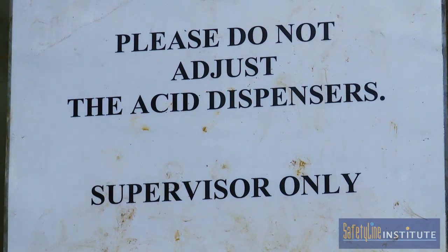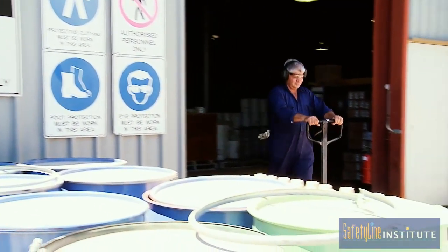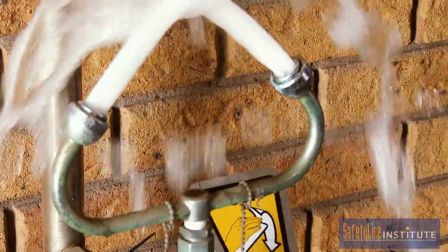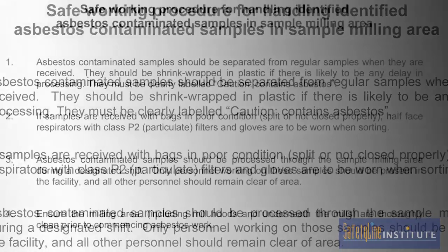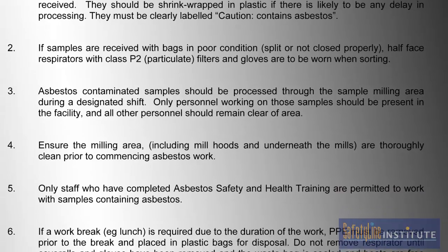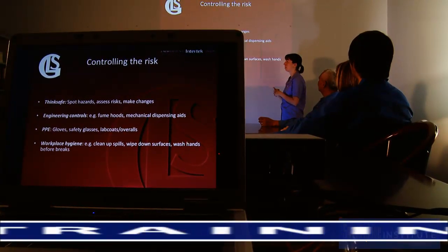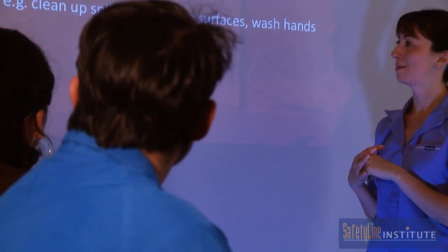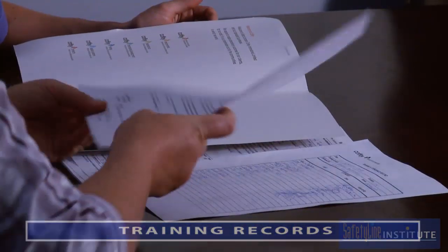Safe work practices may involve restricting the number of people exposed to a hazardous substance, reducing exposure time, keeping the work area clean, prohibiting eating, drinking and smoking in contaminated areas, keeping lids on containers when not in use, and providing decontamination facilities. Safe working procedures should be documented — for example, in the form of a safe work method statement. The business also has a duty to inform and train workers who use or may be exposed to hazardous substances, including training in safe working procedures, use of controls, emergency and first aid procedures, and use of personal protective equipment. Records of this training must be kept to determine who has been trained and who may need refresher training.